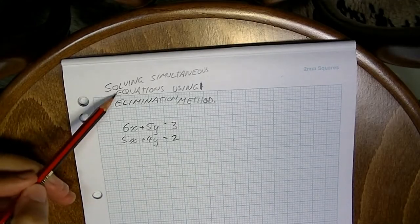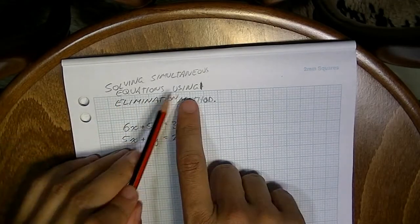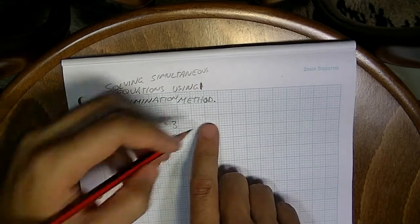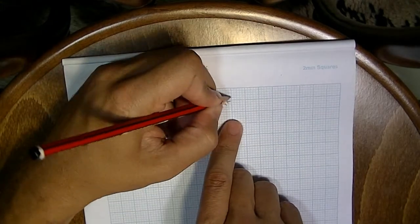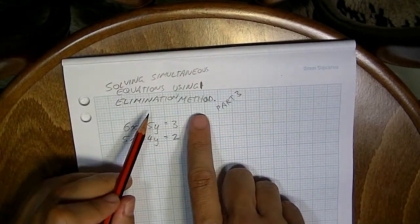Okay, we're solving simultaneous equations again. We're using the elimination method again. This is part three of the elimination method.